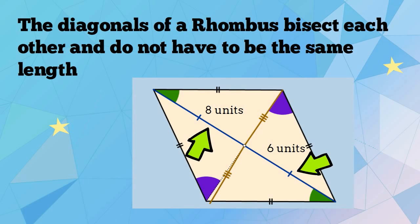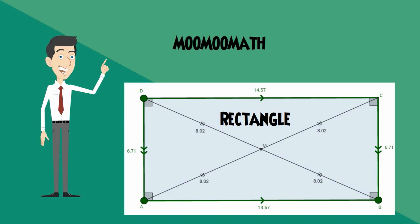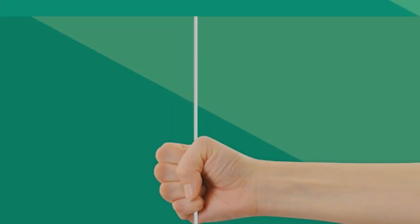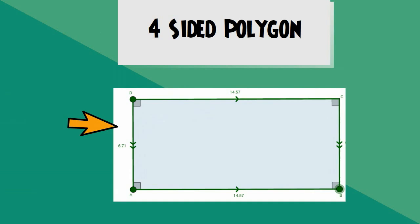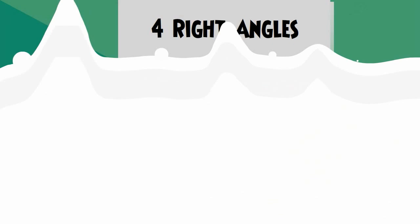Welcome to MooMooMath. In this video I would like to talk about the properties of a rectangle. A rectangle is part of the quadrilateral family, which means it is a plane shape with four sides. A rectangle is a four-sided polygon with opposite sides being parallel. In addition, a rectangle has four right angles, and the sum of these interior angles adds to 360 degrees.